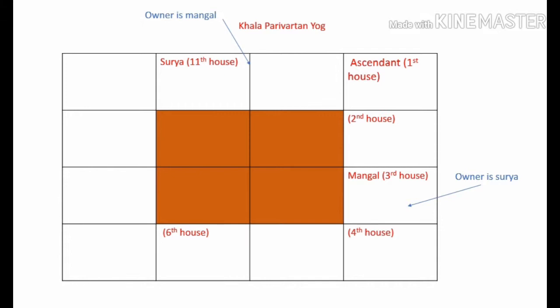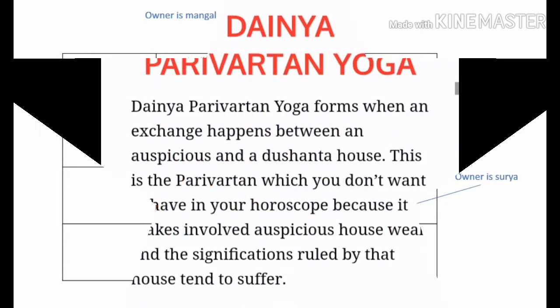In this case, Sun and Mangal have exchanged houses. Why is there wickedness associated with this yoga? The third house is the house of efforts and also the house of loss of comforts, because it is twelfth from the fourth house. The fourth house is about comforts and peace of mind, and the third house is about hard work and effort. So you have to come out of your comfort zone and put in efforts to achieve what you want. Even if the exchange were between the third house lord and the first house lord, it would still form a Khala Parivartan Yoga. In Khala Parivartan Yoga, the third house lord is mandatory.